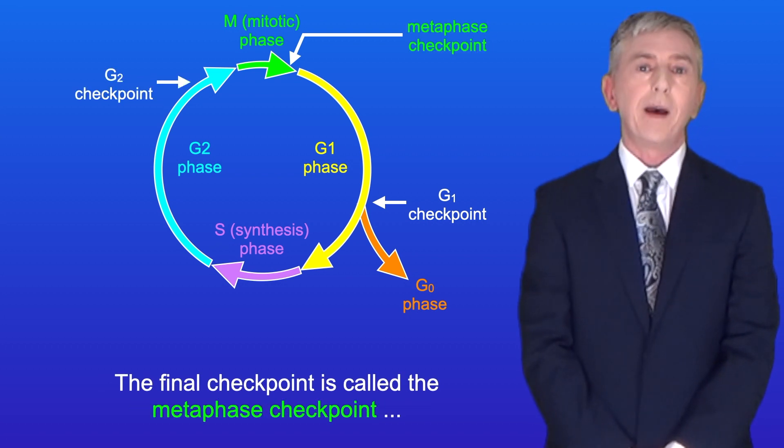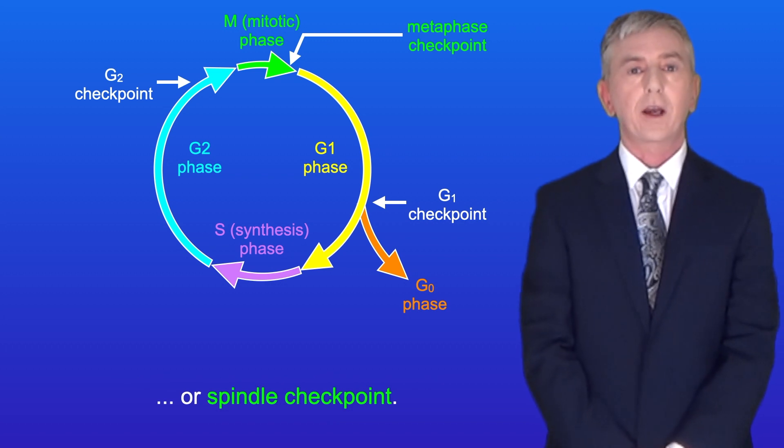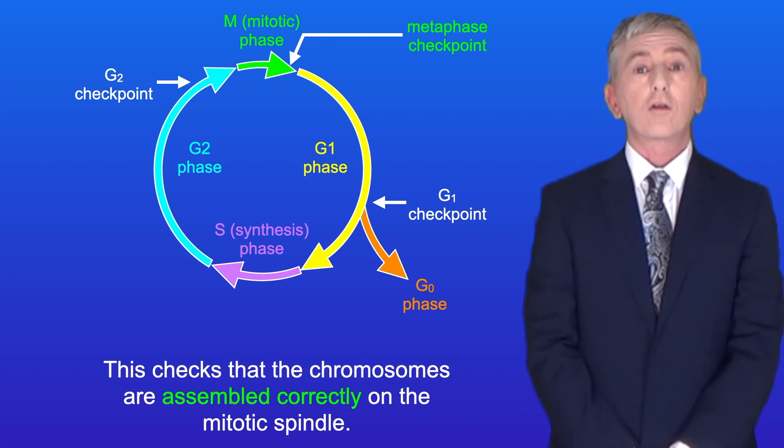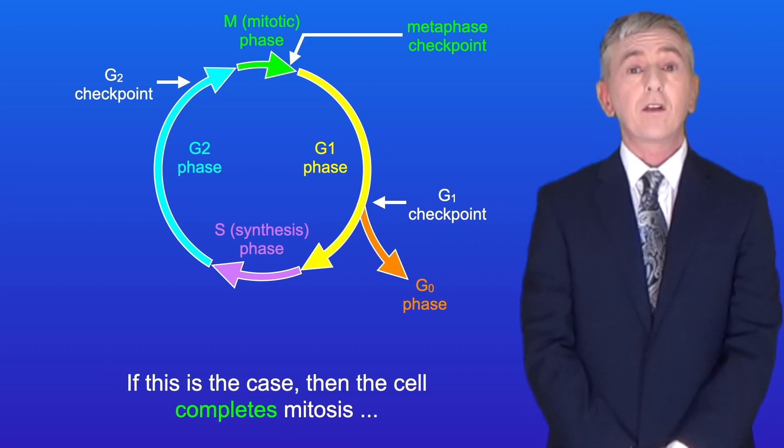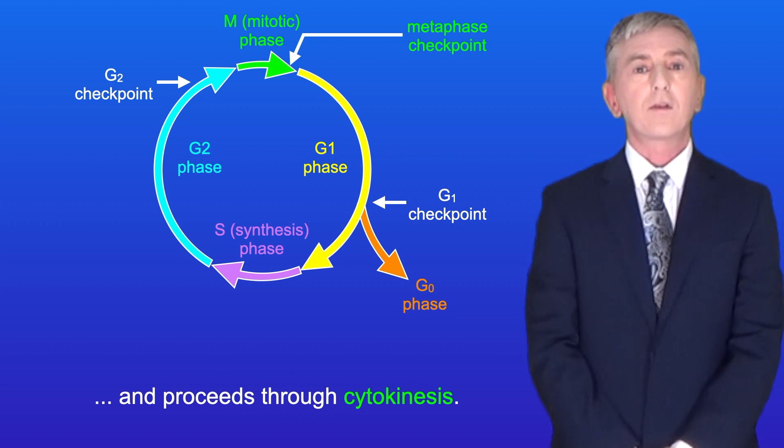The final checkpoint is called the metaphase checkpoint or spindle checkpoint. This checks that the chromosomes are assembled correctly on the mitotic spindle. If this is the case then the cell completes mitosis and proceeds through cytokinesis.